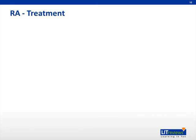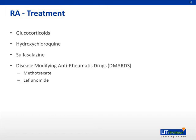A number of treatments are available for rheumatoid arthritis, all of which modulate the immune system. Glucocorticoids, such as prednisone, are often utilized to initially control symptoms or manage flares of disease, but due to side effects such as osteoporosis and hyperglycemia, are only used in low doses as chronic therapy. Hydroxychloroquine and sulfasalazine do not lead to much immunosuppression and can be useful for mild disease activity. For most patients, however, disease-modifying anti-rheumatic drugs, or DMARDs, which have been demonstrated to improve the course of disease, are necessary. This group includes methotrexate and leflunomide, both of which affect DNA metabolism and lymphocyte proliferation.